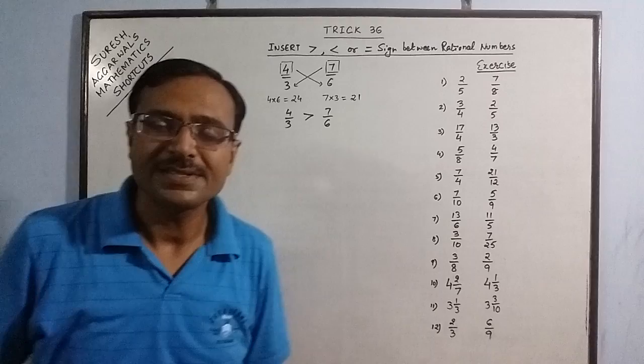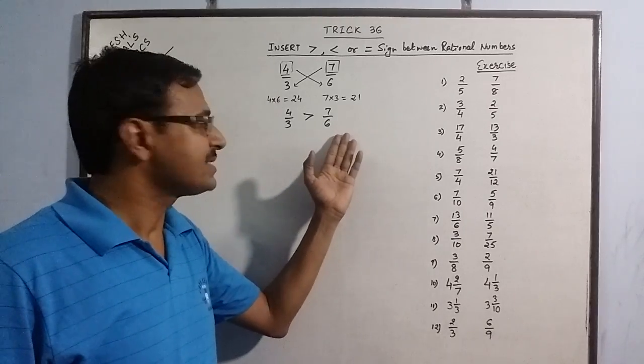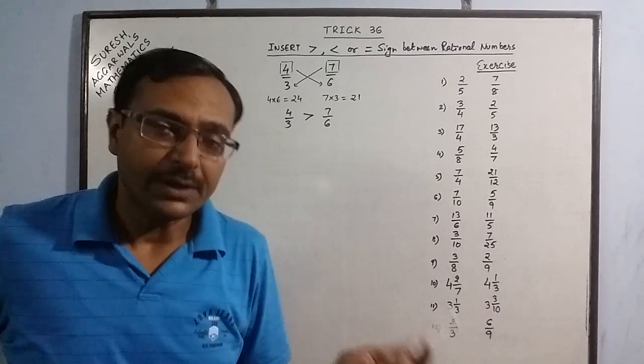Using this simple concept you can tell that 4 by 3 is greater than 7 by 6 just by looking at the two fractions and not by doing the traditional method.